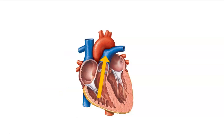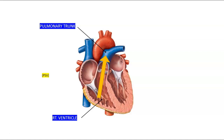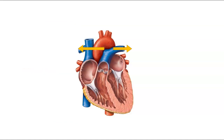From the right ventricle, blood goes to the pulmonary trunk via the pulmonary semilunar valve. Here, the pulmonary trunk will split into a left and right pulmonary artery.